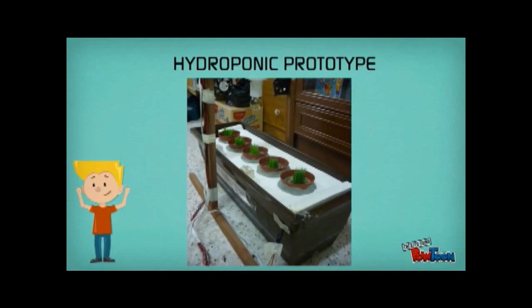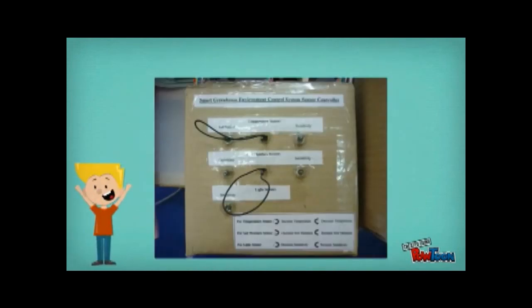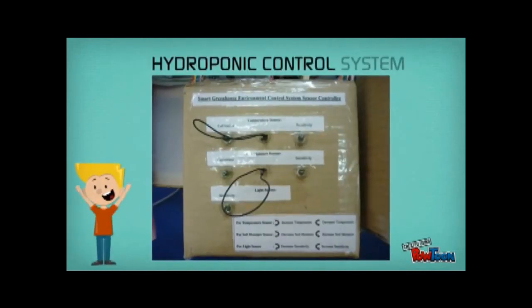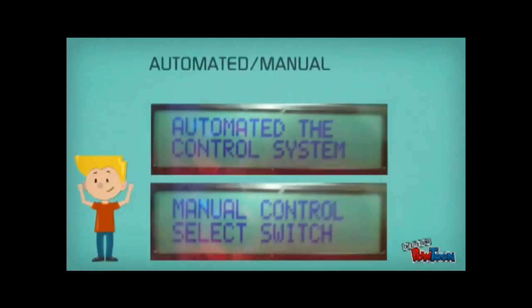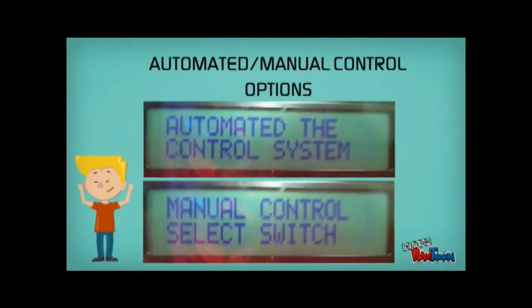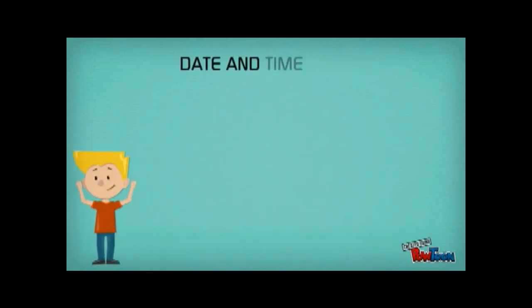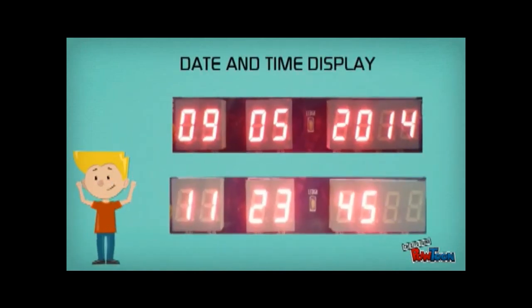This picture shows the hydroponics system prototype. This is the hydroponics control system and its indicating system. It has automated and manual control options. The system also contains a date and time display.